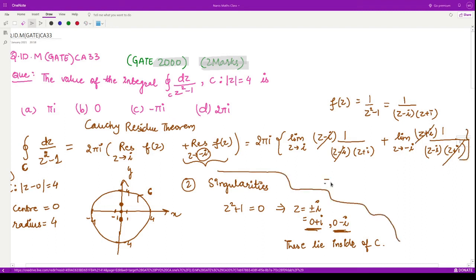We have 2πi multiplied by: if you substitute z as iota we get 1/(iota + iota) = 1/(2iota), and if you substitute z as minus iota we get 1/(-iota - iota) = -1/(2iota). This is equivalent to 2πi multiplied by 1/(2iota) minus 1/(2iota). Obviously these terms cancel out each other, so the resultant obtained is 0.